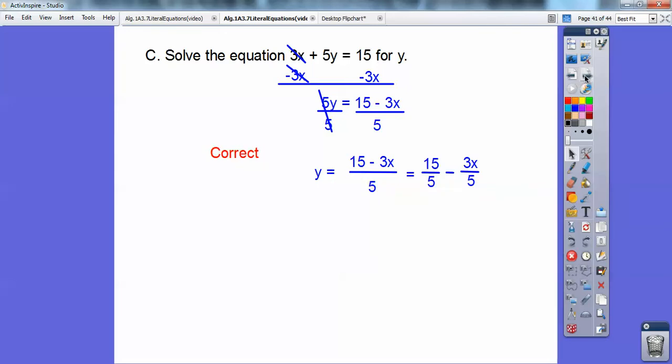Because that 5 in the bottom goes with the minus 3x also. But what you can do is separate them up. Since the 5 goes with the 15 and the 5 goes with the 3x, you can separate them up, and then you can go ahead and cancel with the 15 that way. That's fine. So you can take either one of those answers are okay.